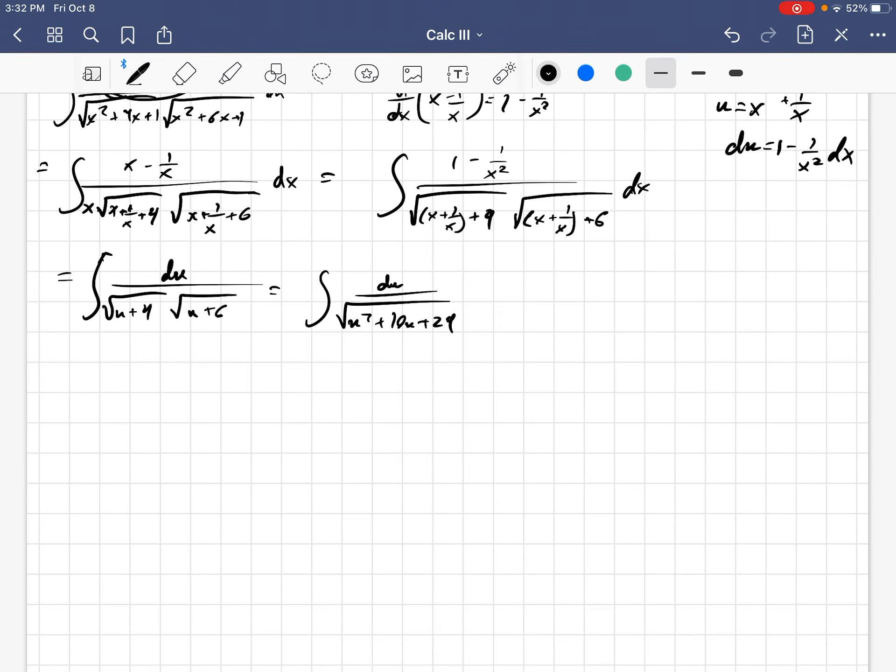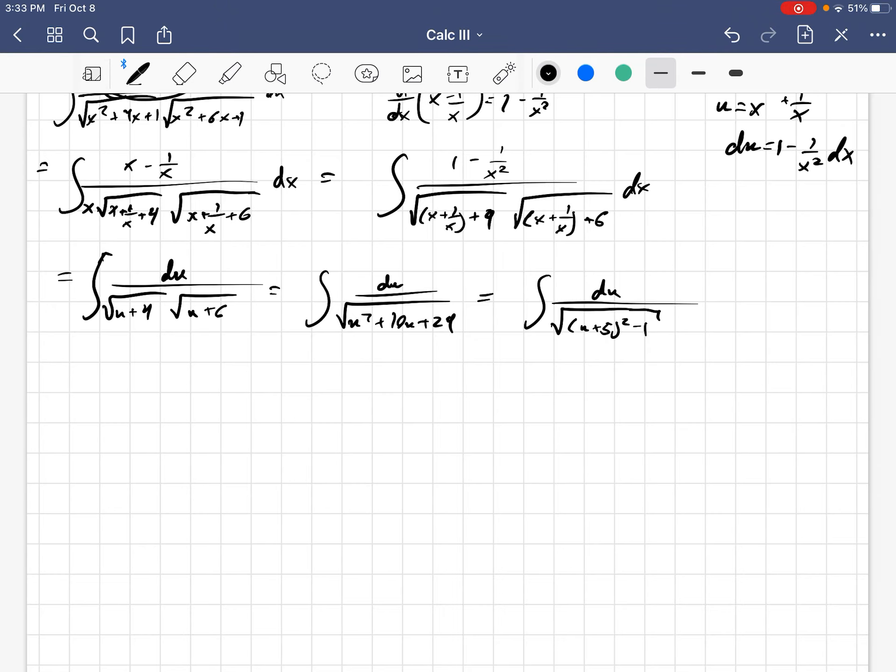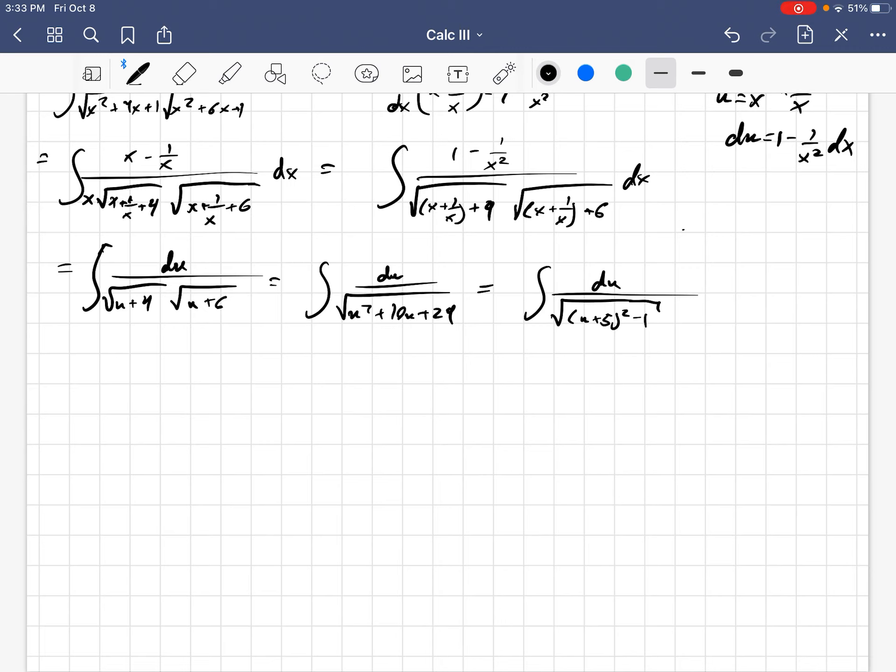And now, hopefully, you can see what to do with this integral. This is a pretty standard integral right here. We should complete the square and do trig sub. So, du over square root u plus 5 squared minus 1. And so, I should let u plus 5 be equal to secant theta so that I get secant squared minus 1, which is tan squared. And then that becomes just tan theta after we apply the square root.